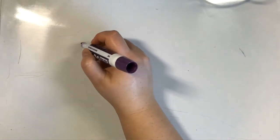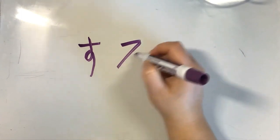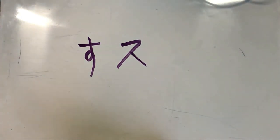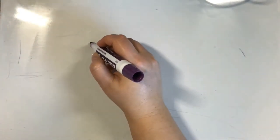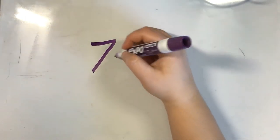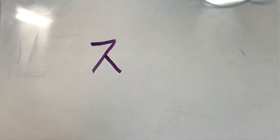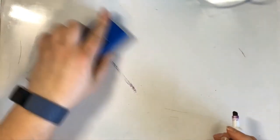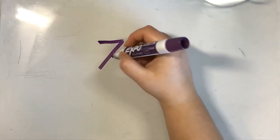Su in hiragana and su in katakana look very different from each other. Su is pretty easy — start from the top left, work your way right, come back down towards the left, then do another line that intersects in the middle and comes down towards the right. So: across, down, middle, down.